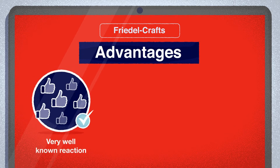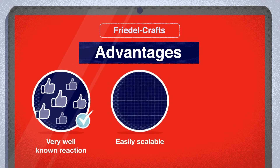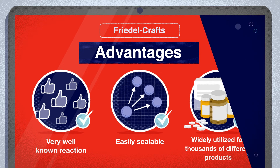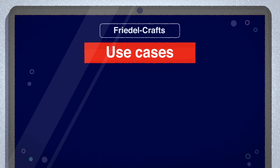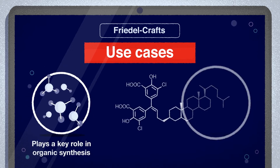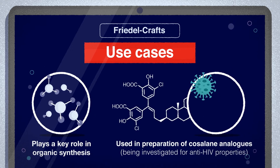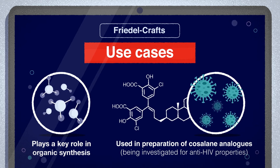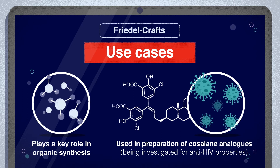It's a very well-known reaction, easily scalable, and widely utilized in organic synthesis for thousands of different products. There are not many alternatives to functionalized aromatic compounds, so despite being over 140 years old, this reaction continues to play a key role in organic synthesis. A notable example of its application is the preparation of cosiline analogs, which are being investigated for their anti-HIV properties.